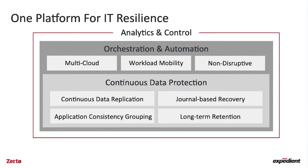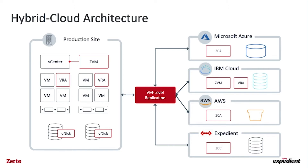Looking at our architecture, it's very straightforward. Zerto can be installed and up and running in just a couple of hours. There are two components typically on-premises: a virtual manager, of which you have one on each site, and our virtual replication appliances. We don't install agents in any VMs — we operate solely at the platform or hypervisor level. We support VMware, Hyper-V, Azure, AWS, IBM Cloud, and Expedient's cloud platform as well.